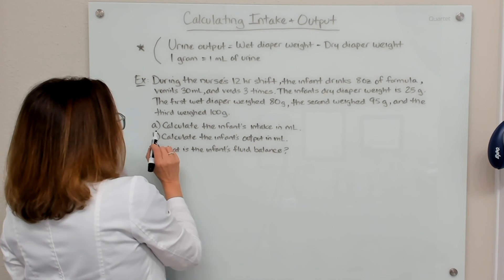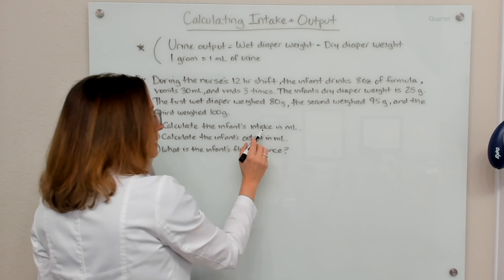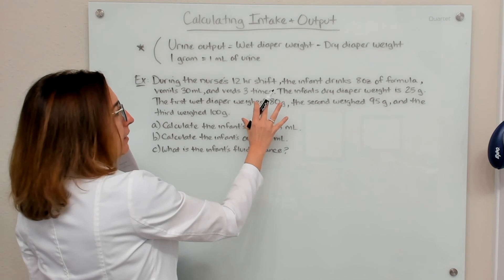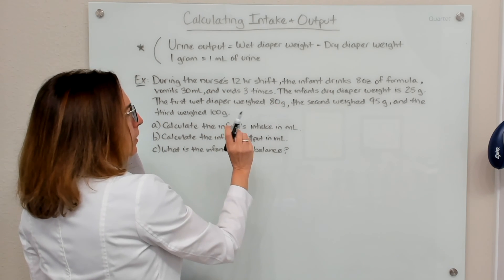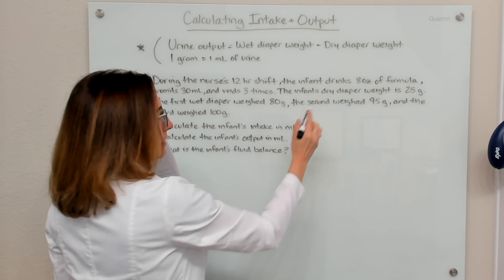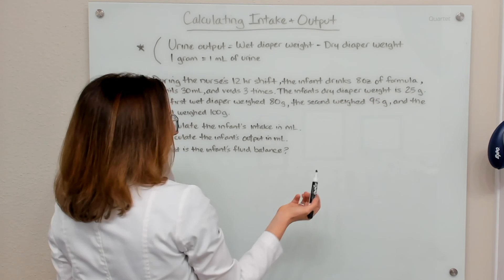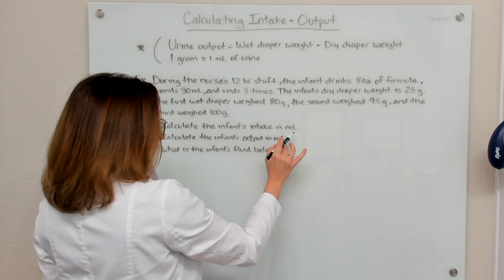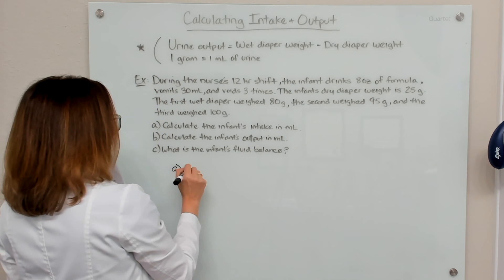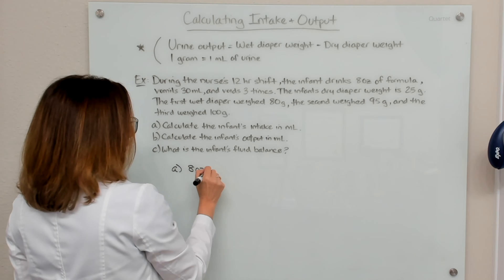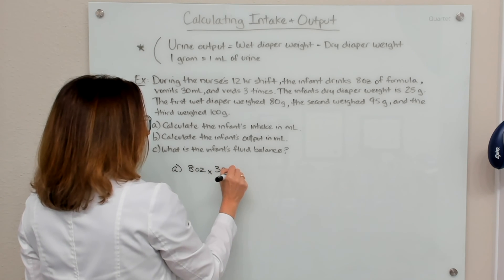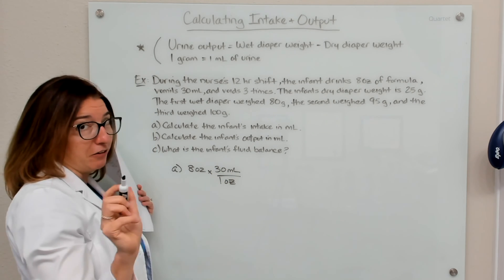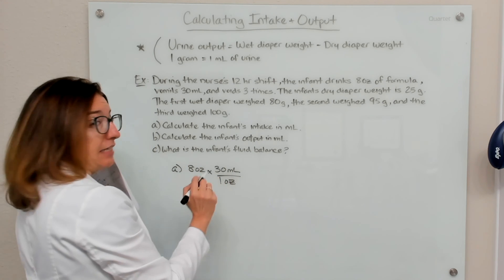Our first question is asking us to calculate the infant's intake in milliliters. So with this scenario, the only thing we are given as far as intake is the fact that the infant drank eight ounces of formula. So we need to convert that eight ounces to milliliters. So for part A, we would take eight ounces and multiply times the appropriate conversion factor.